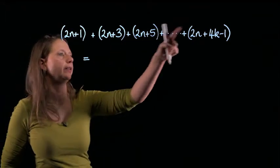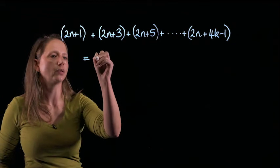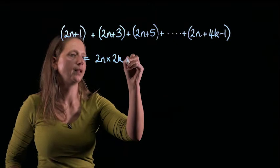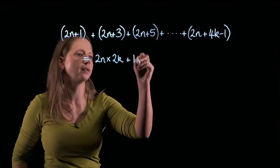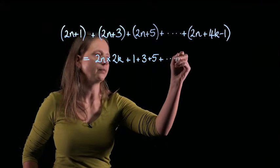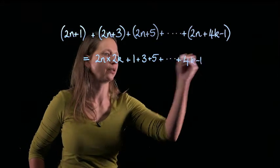And now I can simplify this a little bit. So I've got 2n appearing every time. So if I take those all out, I'll have 2n times 2k, and what I've got left is the 1 plus 3 plus 5 all the way up to 4k minus 1.